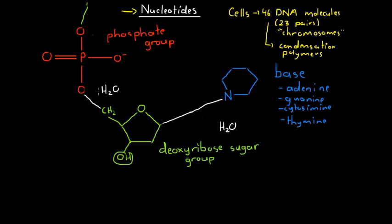That is how our DNA is produced: lots and lots of nucleotides bonding together. Each nucleotide is just this group here, and these can bond at both ends to form a condensation polymer we call a DNA molecule. These DNA molecules have lots of different sequences of nucleotides, or sequences of bases, and it's these sequences of bases that make up the proteins our body is made of — controlling our physical appearance, frame, shape, and size.